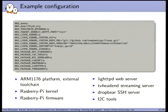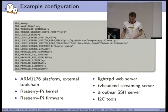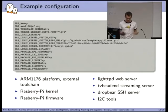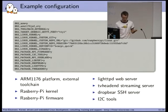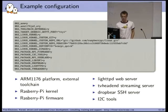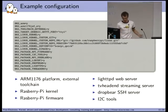Here's an example configuration: just like the Linux kernel, it's saved as a `.config` text file. The Raspberry Pi configuration specifies ARM platform with an external toolchain, includes the Raspberry Pi firmware proprietary binaries, I2C tools, the TVheadend streaming server, DropBear SSH server, and lighttpd web server. With just this configuration, BuildRoot will directly produce an image you can use on your Raspberry Pi.